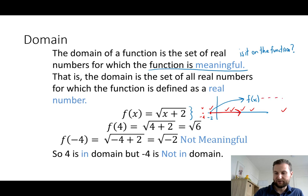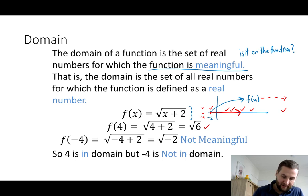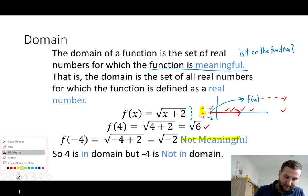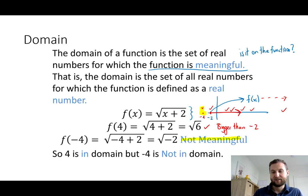Anywhere from -2 going to positive infinity, all these values are part of the function. For example, F(4) = √6 — that's a good value, it's in the domain. F(-4) is not part of the actual graph, so it's not meaningful and not part of the domain. So the domain is everything greater than or equal to -2.